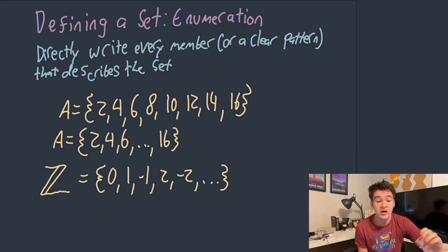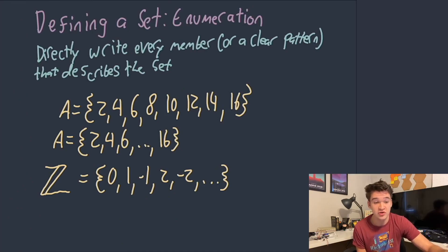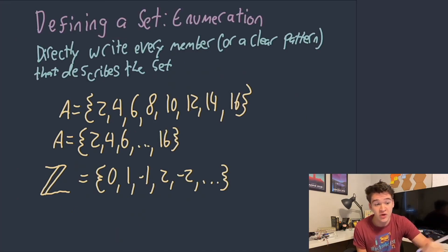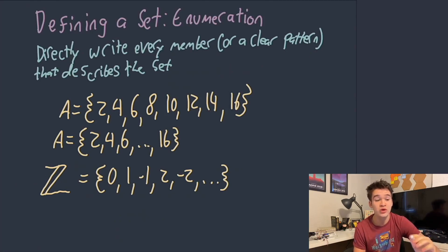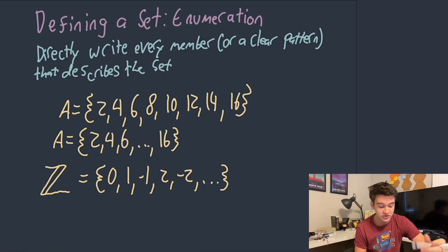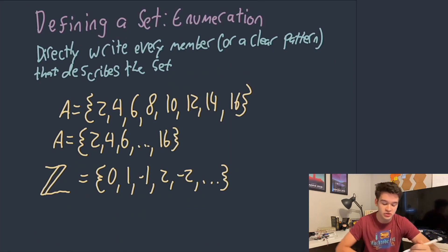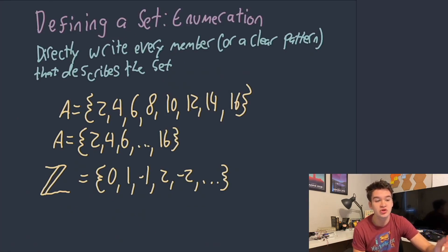Now that we understand all the things we can do to sets, let's talk about how we actually define sets. The way we've been doing it throughout this video is just with enumeration — essentially just listing every member of the set. You can either write out every member, or establish a very clear pattern. You do have to be very careful when establishing patterns because the exact pattern has to be clear and unambiguous. For instance, if you were writing out the integers, you can't just write 0, 1, 2, and so on — or 0, 1, -1, and continue on — because there's no super-established pattern there. You have to continue to the point where you establish a hard pattern.